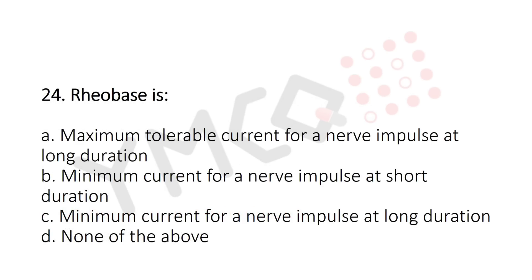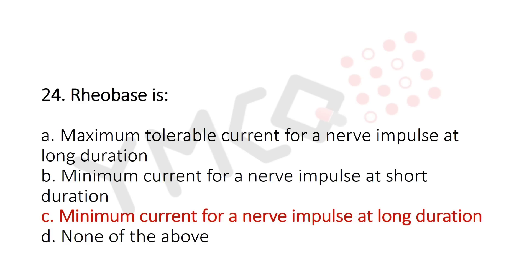Question 24: Rheobase is — option A: maximum tolerable current for a nerve impulse at long duration; option B: minimum current for a nerve impulse at short duration; option C: minimum current for a nerve impulse at long duration; option D: none of the above. The answer is option C: minimum current for a nerve impulse at long duration.